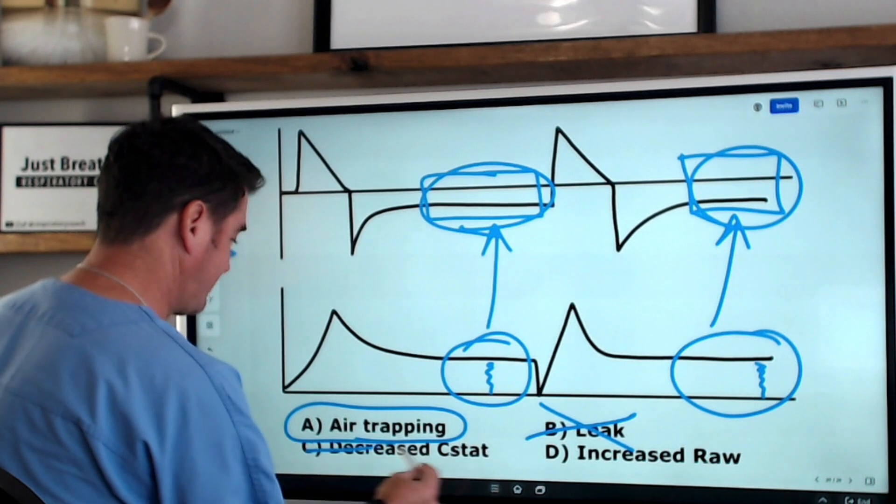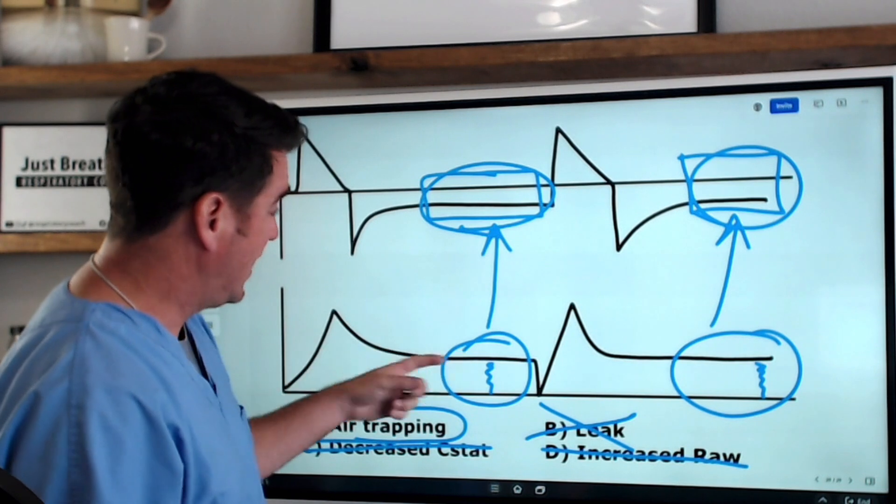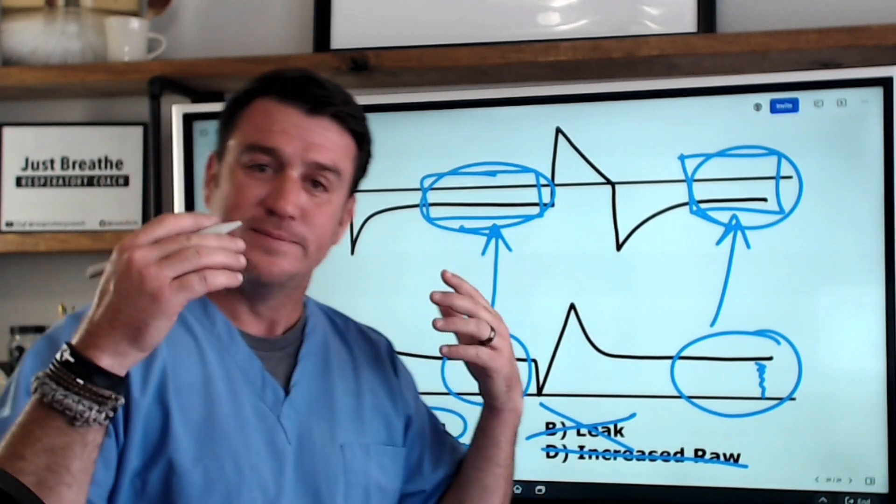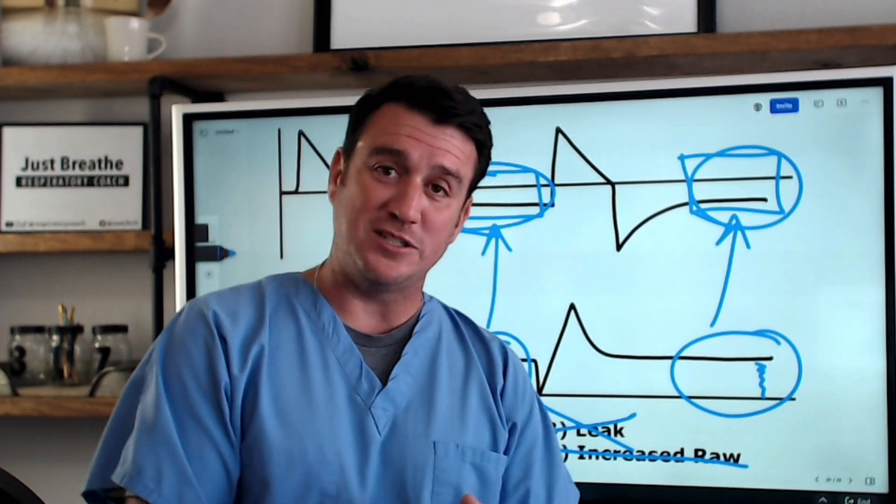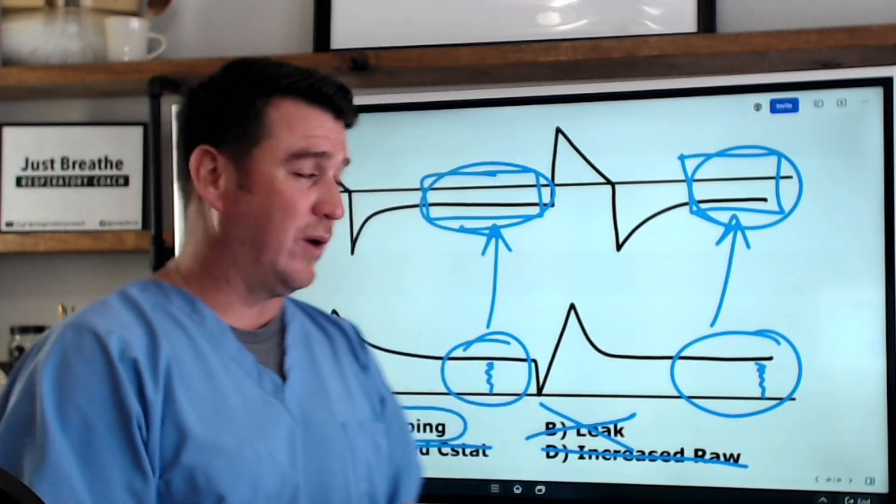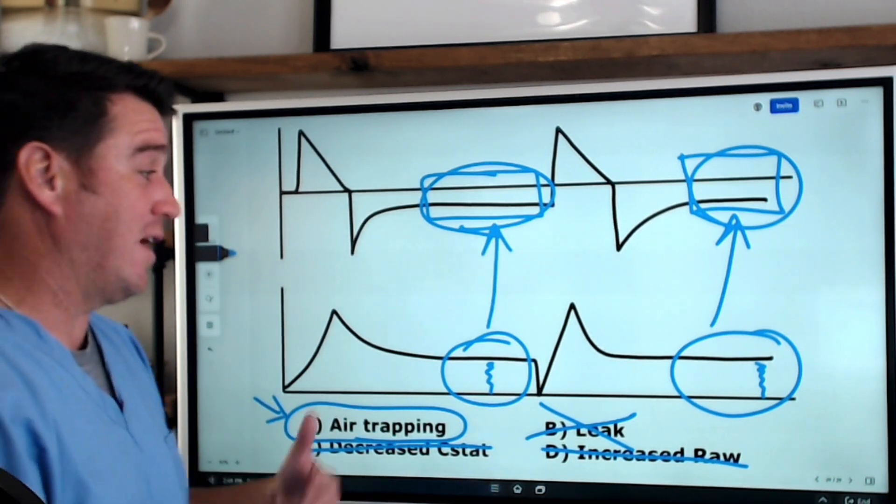Now, again, decreased static compliance, increased air resistance, because our volume is not coming back to baseline. That's why our volumes are varying right now. So the best we can choose at this question is that this patient is air trapping and we need to figure out why.